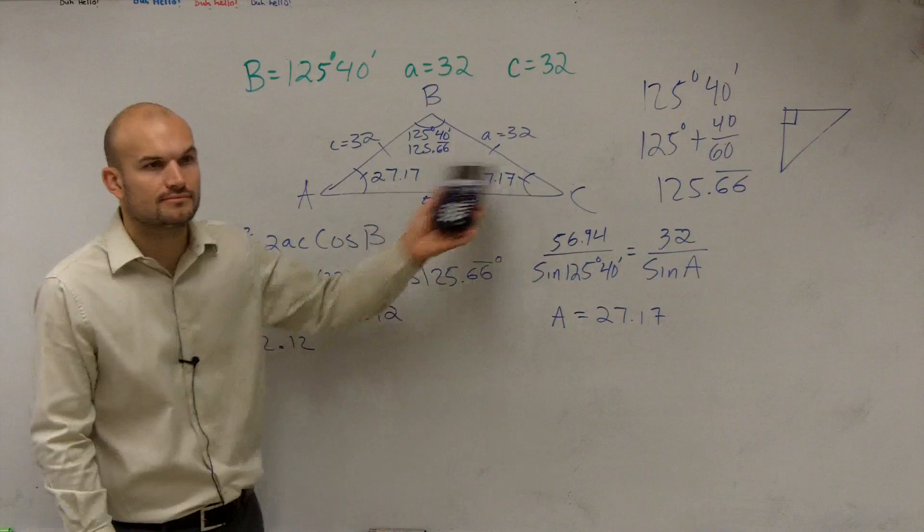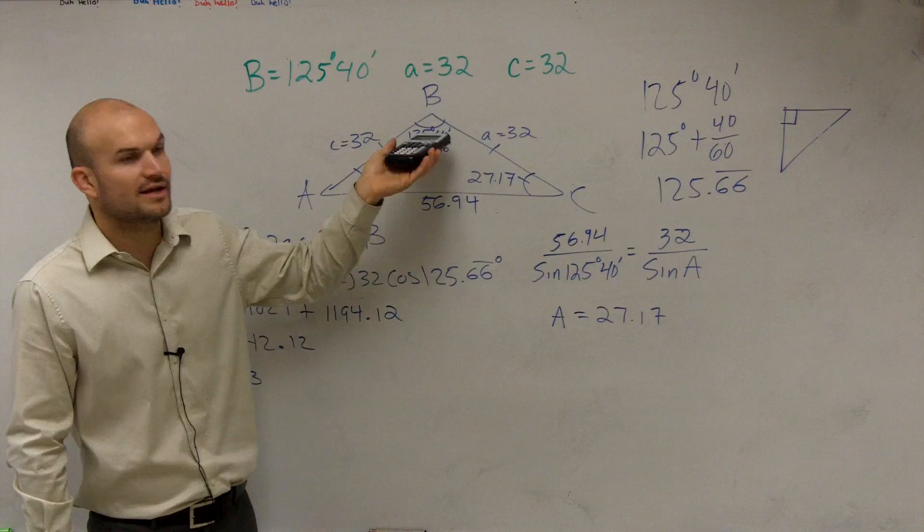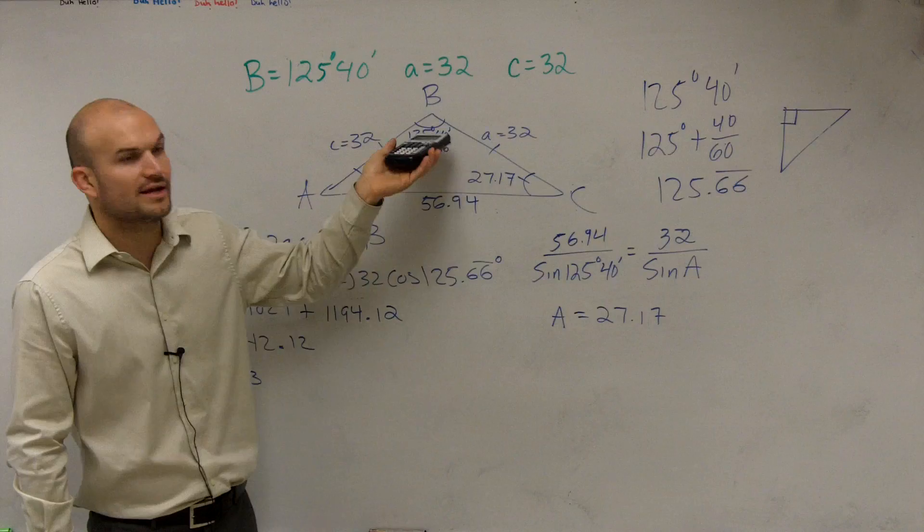Since these are obviously, these are equal assosceles, you can just write them in there. You could also take 180 minus 125.66, find the answer, divide by 2, and you get those answers as well. Okay? Questions? Good? Okay. All right.